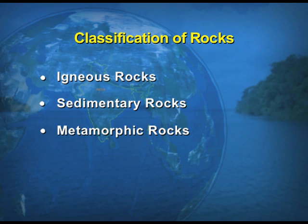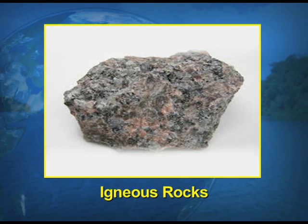Now, we will be taking up each of these types one by one. First, we take up igneous rocks. The word igneous has been derived from a Latin word, ignis, which means fire. Here is a picture showing what the igneous rock looks like.